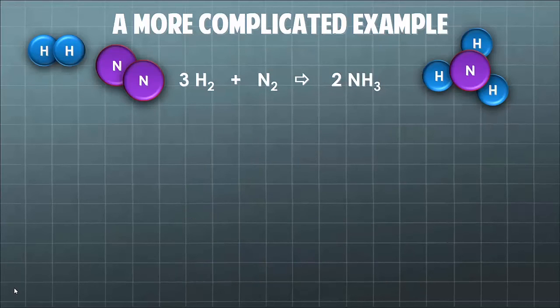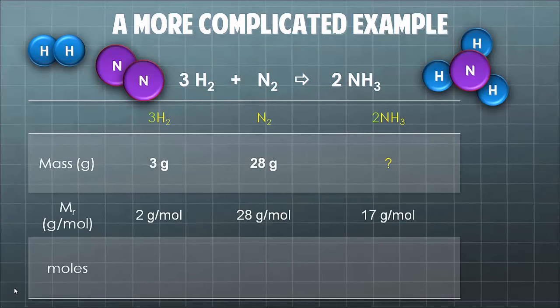So let's take a look at a slightly more complicated example. Here we've got some hydrogen and some nitrogen producing some ammonia. I'm going to set out the table like I did before. Our job is to work out how much ammonia we can produce. In this case we've got 3 grams of hydrogen and we've got 28 grams of nitrogen.